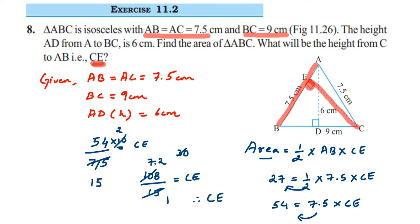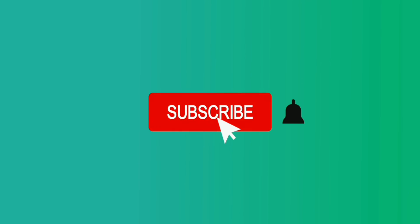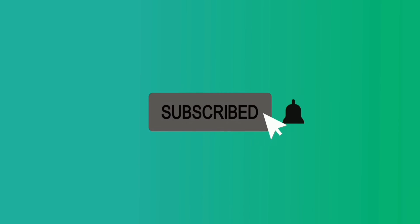Therefore CE is equal to 7.2 cm. We found both things in the given question — we got the area and using the area we got the height. I hope this question is clear. If you have other questions or doubts, you can drop a comment below. Thank you so much for watching.